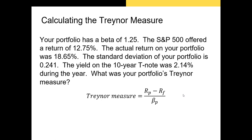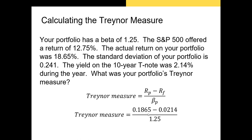Using the same example: our Treynor measure formula replaces volatility with portfolio beta. Our portfolio return is 0.1865 minus 0.0214 in the numerator, and our beta is 1.25 in the denominator. That gives us a Treynor measure of 0.1321, which we can use to compare to the performance or Treynor measure of other funds.